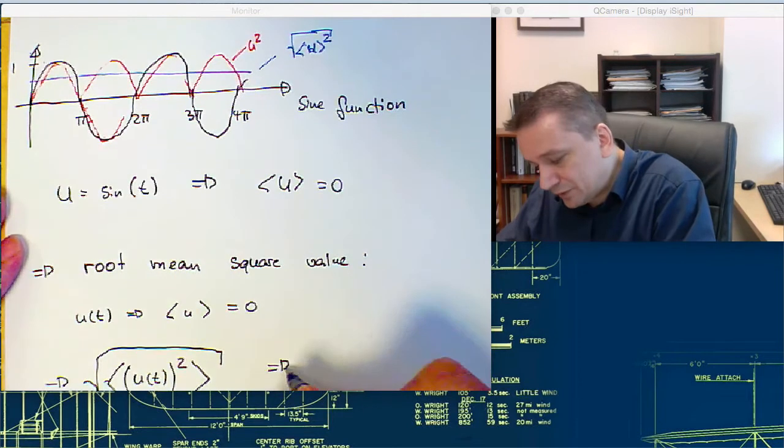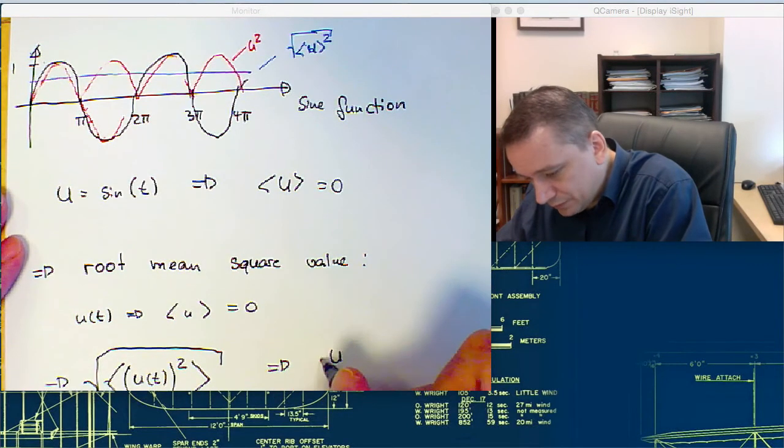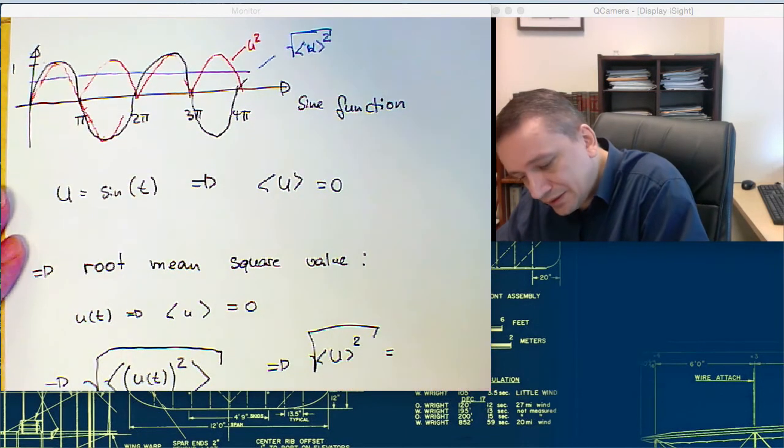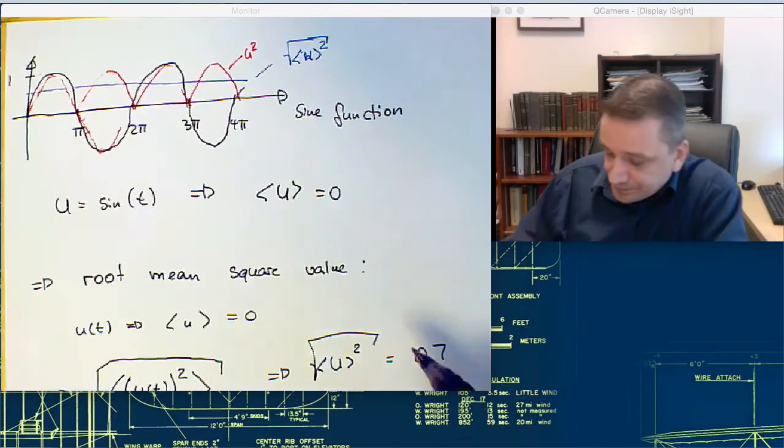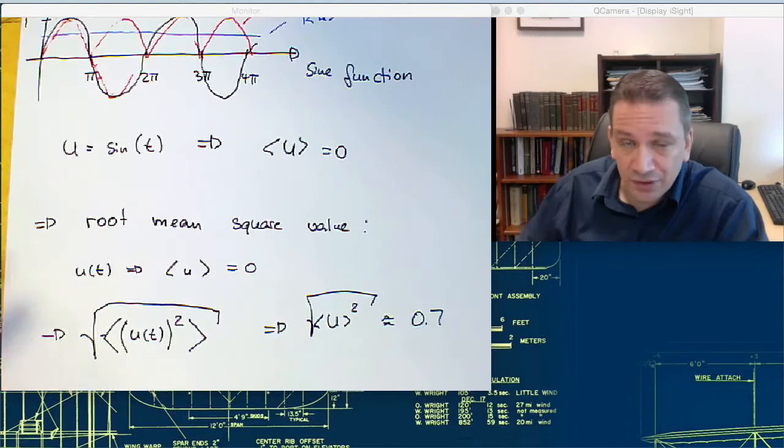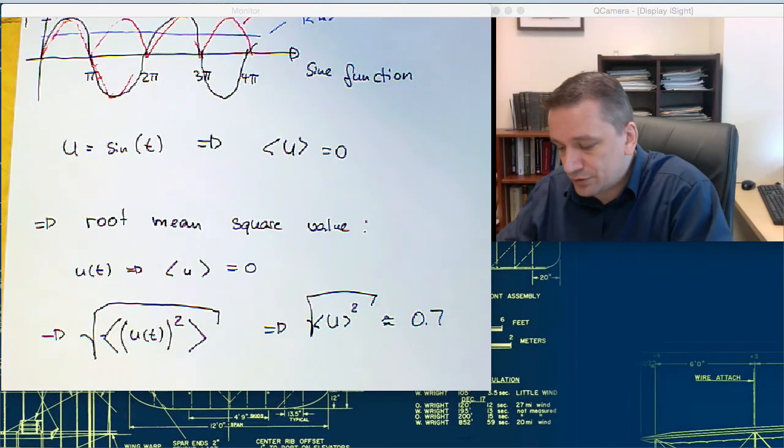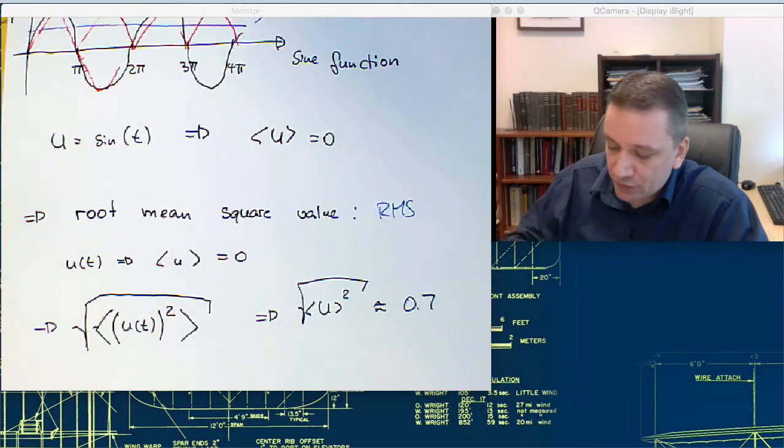For example, for the sine function, that's going to be the root mean square value. It's going to be then about 0.7. So that gives you then somewhat a value for the fluctuating part.